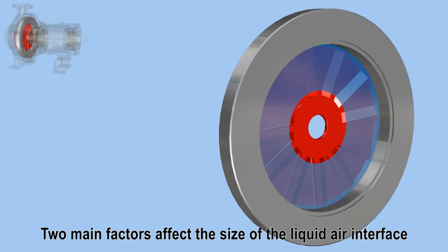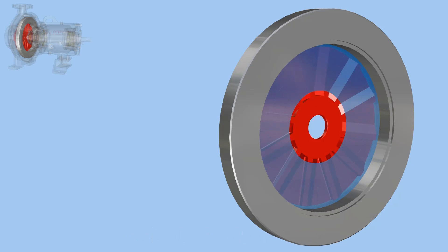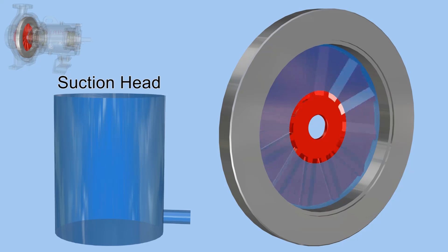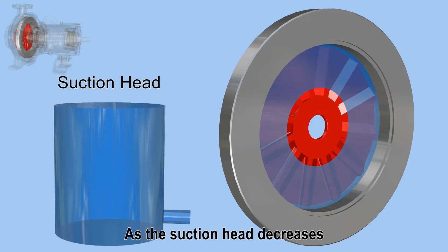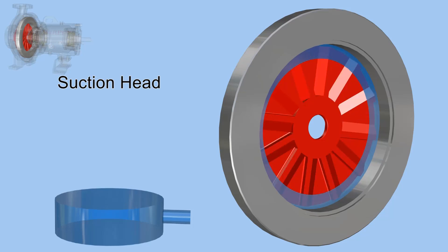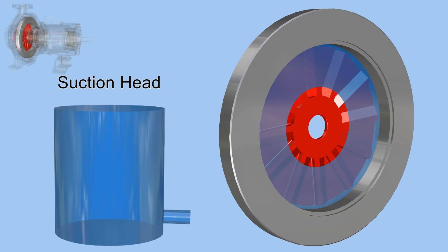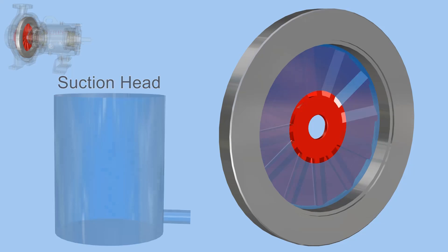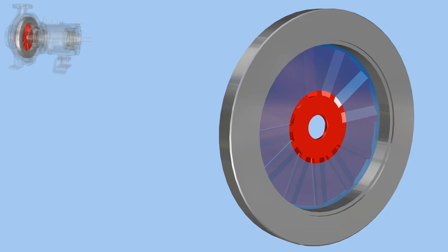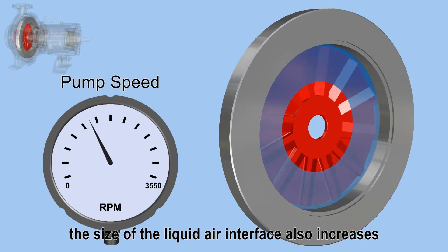Two main factors affect the size of the liquid air interface: suction head and pump speed. As the suction head decreases, the size of the liquid air interface increases. As the speed of the pump increases, the size of the liquid air interface also increases.